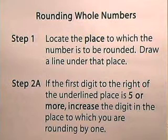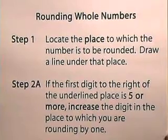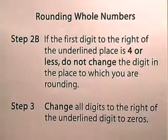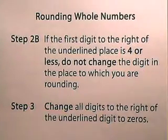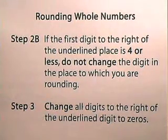Step 2a: if the first digit to the right of the underlined place is 5 or more, increase the digit in the place to which you are rounding by 1. Step 2b: if the first digit to the right of the underlined place is 4 or less, do not change the digit in the place to which you are rounding. Step 3: change all digits to the right of the underlined digit to zeros.